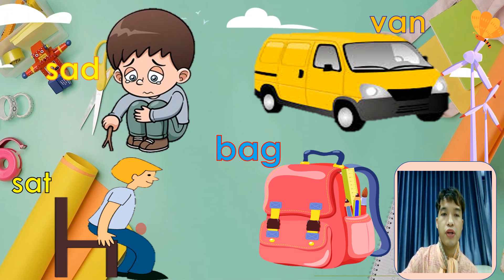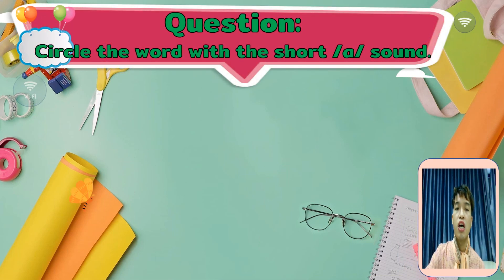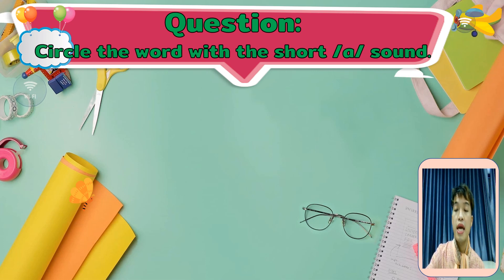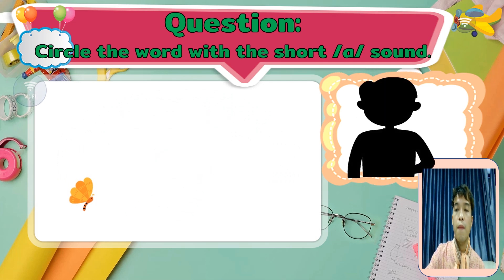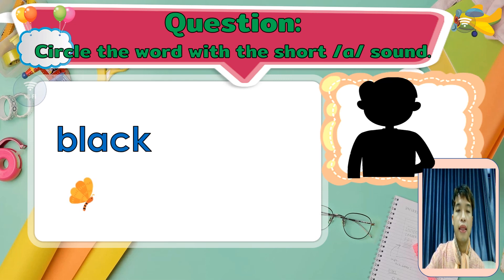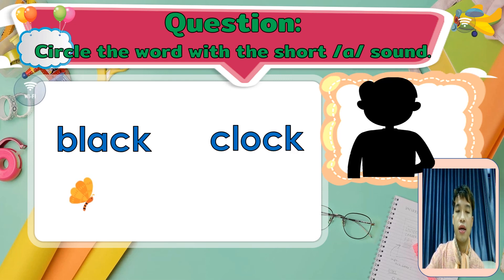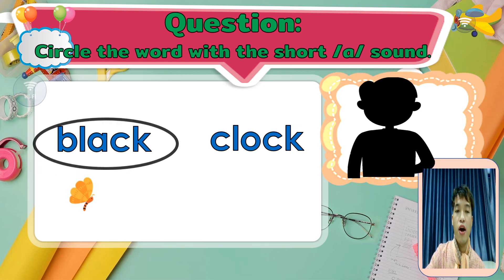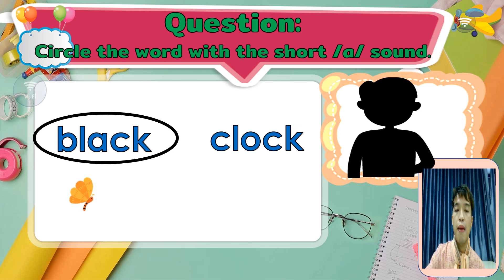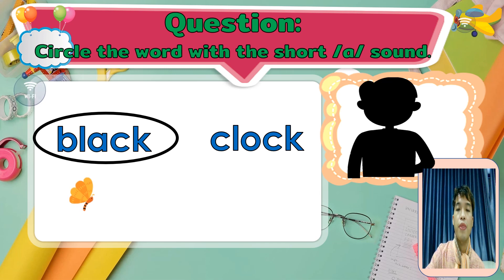Okay students, we have a question: circle the word with a short A sound. I'm going to show you a picture and two words. We have 'black' or 'cluck.' Which one has the short A sound? Very good — black. B, b, black. The other one is cluck. The answer is black. Very good.